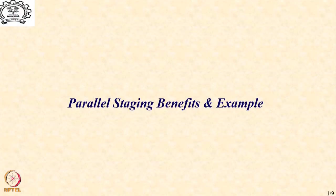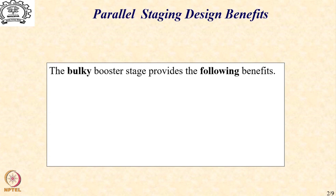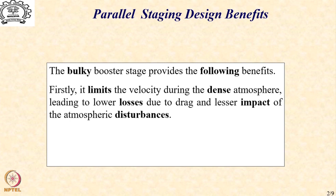Let us look first at the benefits that accrue to us due to parallel staging. We have already noted that the booster stage will generally be a bit bulky, and the first benefit is that it limits the velocity during the dense atmosphere and tries to reduce the drag losses, which actually increase because of a higher amount of base drag as the frontal area presented to the wind is larger because of parallel staging.